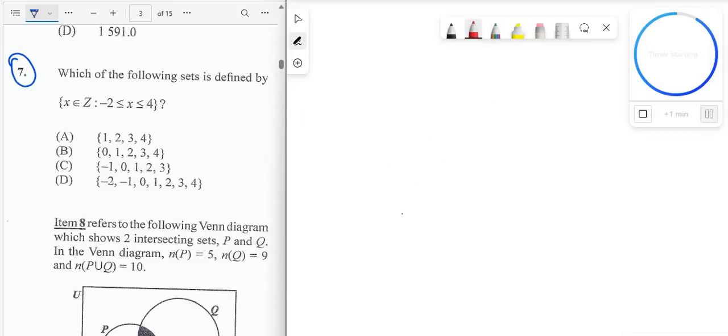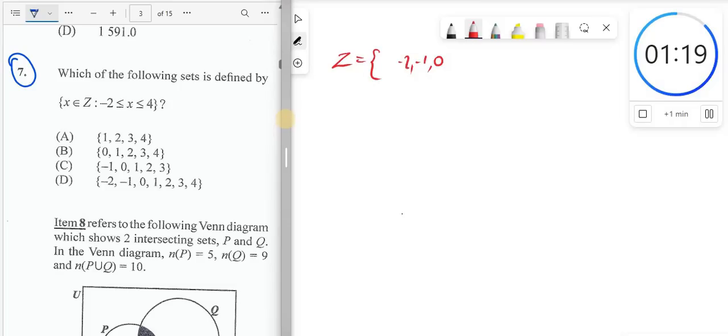So for number 7, we're told that x is a member of integers. Z here represents members that are integers, meaning you have like 0, you have negative 1, negative 2, and you keep on going the same sequence to the left. Keep on getting more and more negative. And as you go to the right, you get more and more positive. The number gets bigger, but in the same sequence. But let's get to the question at hand. So we're told that the x is a member of the set of integers such that x, if we're reading this way, is saying that negative 2 is less than or equal to x. So we're reading this way. We're saying what? x is greater than or equal to negative 2.